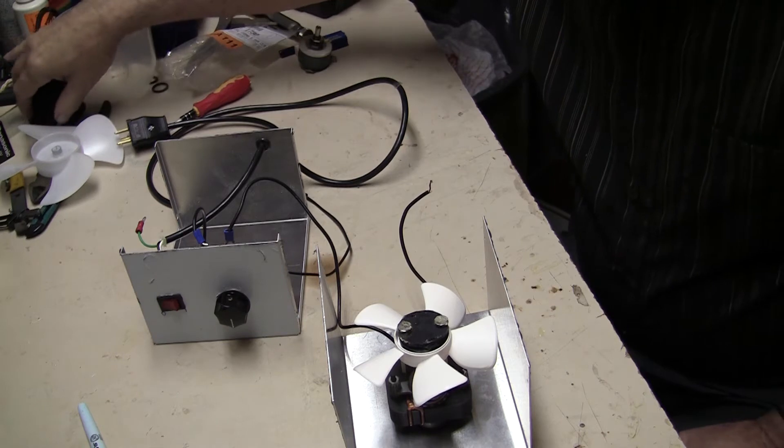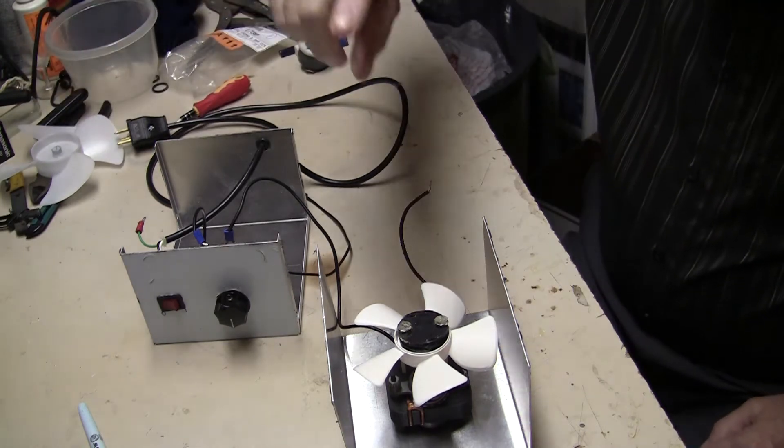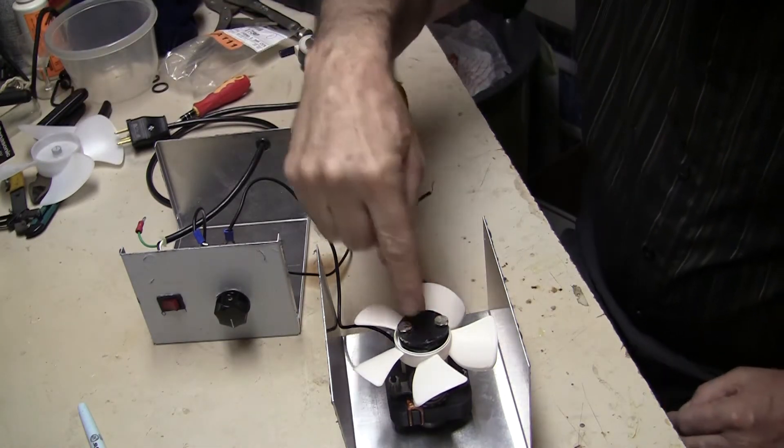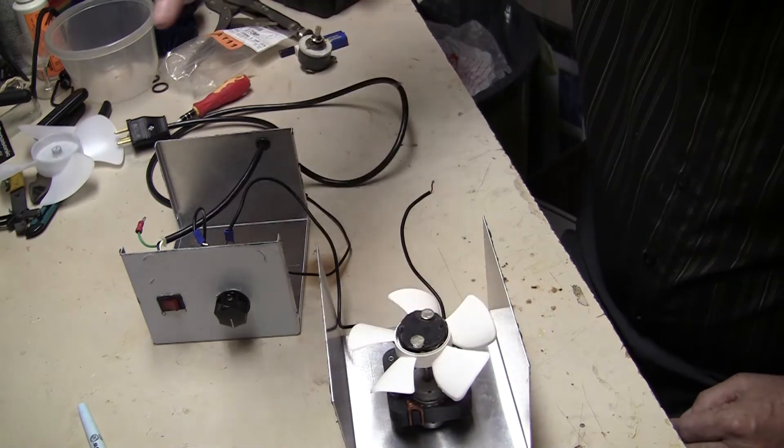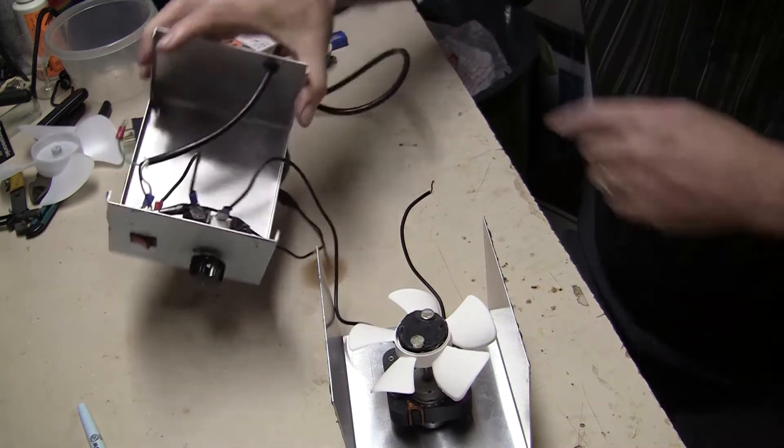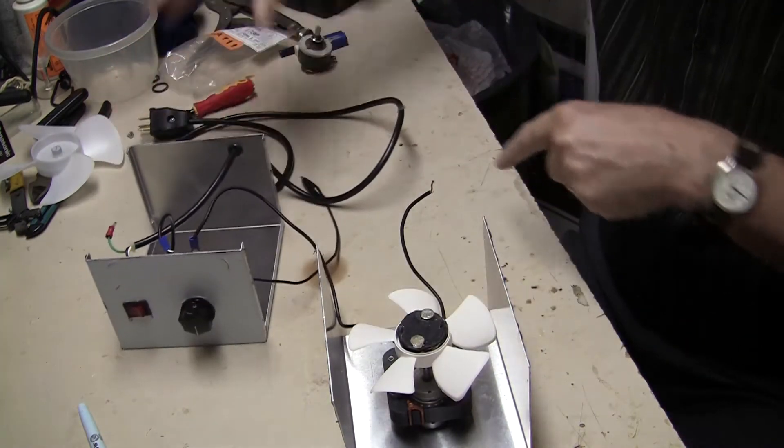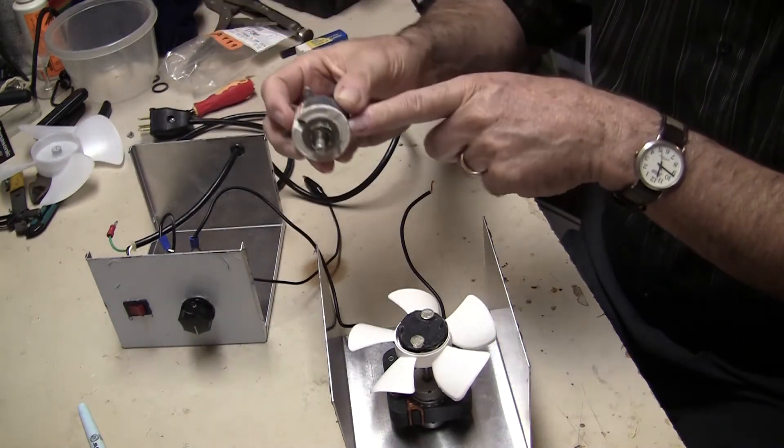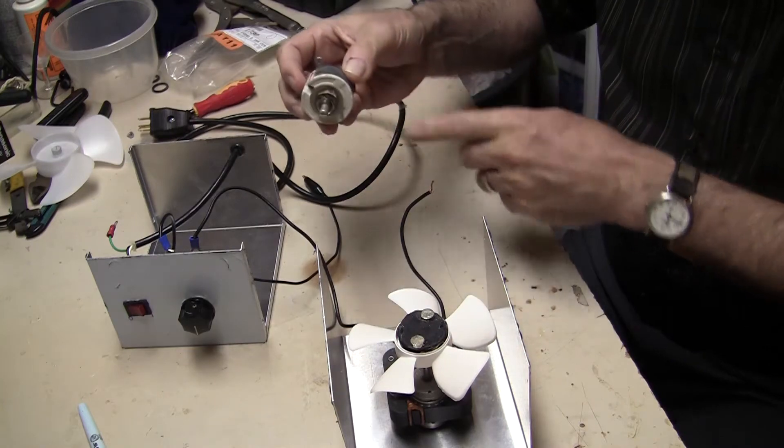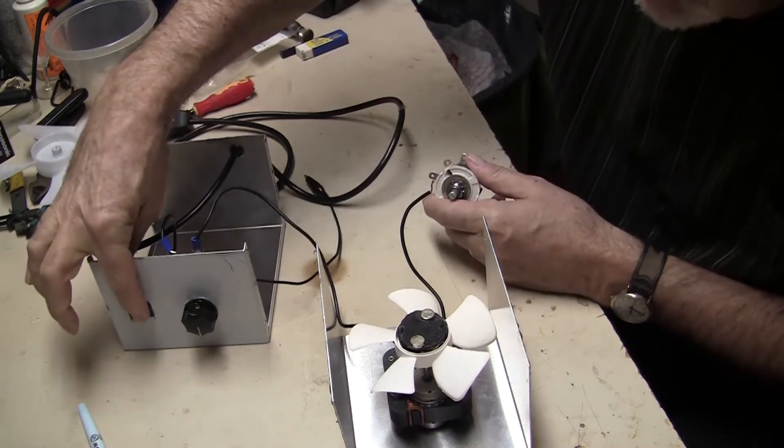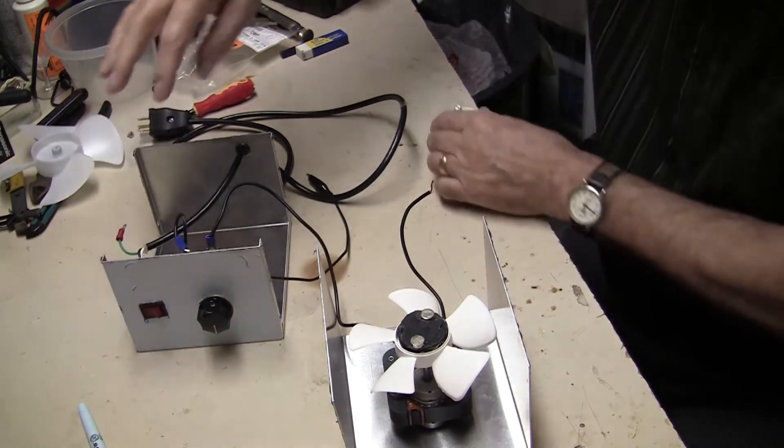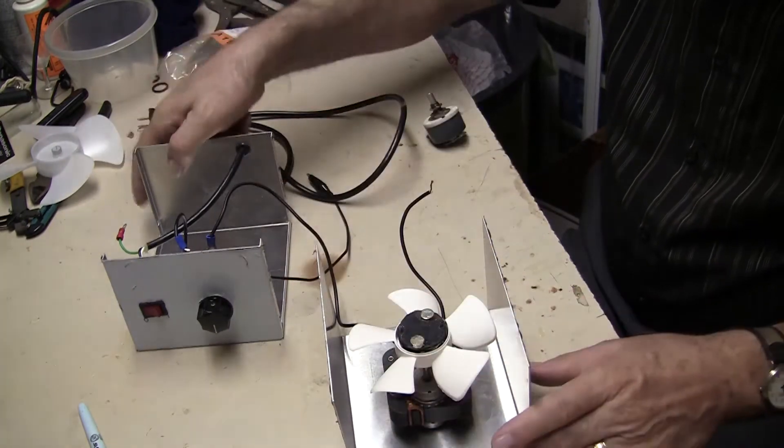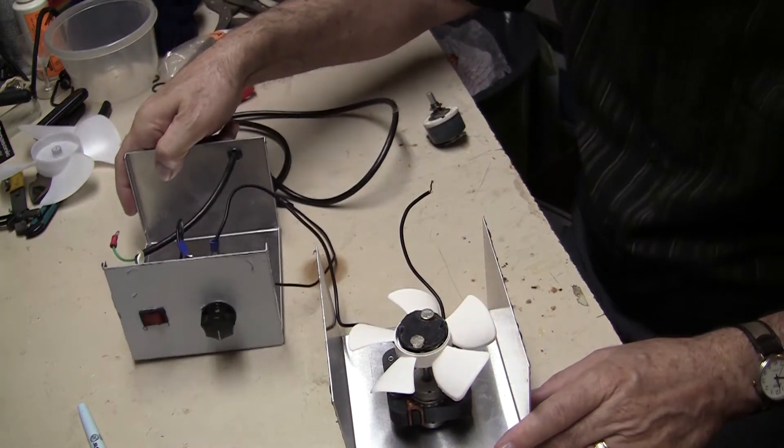So here are the four main parts. The induction motor here, the rheostat. So here's a separate one. This is a high wattage rheostat like this. The AC switch here, and then the housing here, the project box. So let's look at each one in turn.